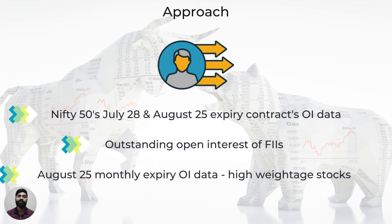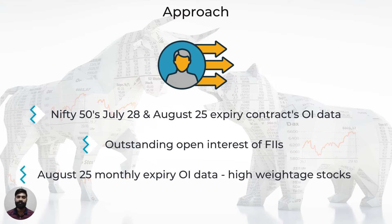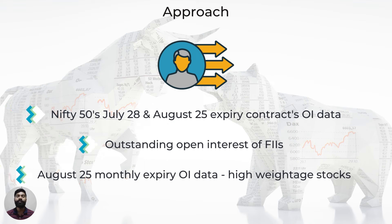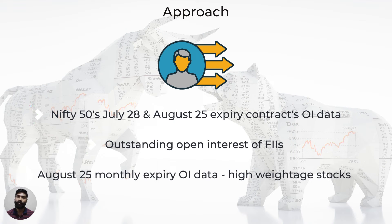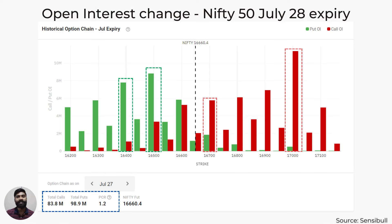Let's now move on to the open interest analysis of the Nifty 50. We look at it at three levels. First, we look at the OI data of the Nifty 50's July 28 expiry contracts and then August 25 expiry contracts. Second, we will look at the foreign institutional investors' or FII trading activity to understand the sentiment of foreign investors. Finally, we will analyze the options OI data of companies that have a significant weightage in the Nifty 50.